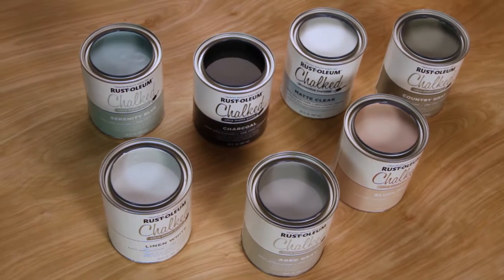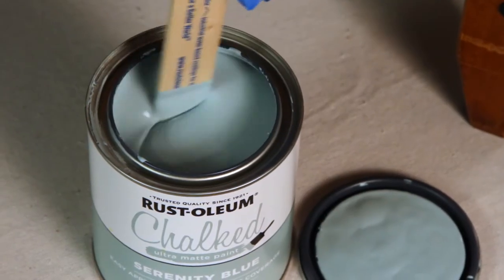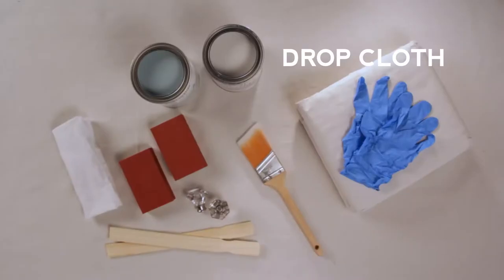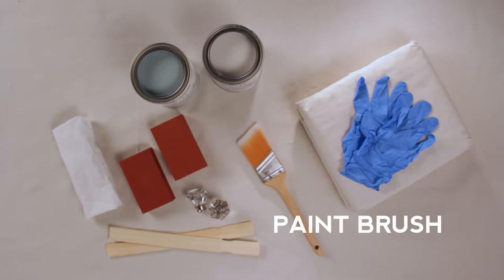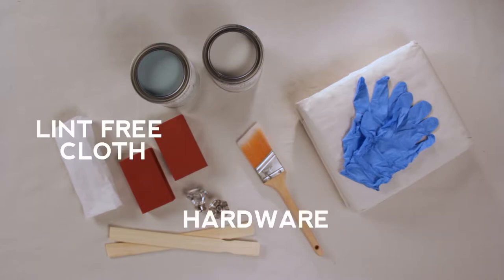Here's what you need for your project. Chalked paint, Rust-Oleum's is great. It's fast and easy to use and dries to a velvety smooth finish. A drop cloth, 180 or 220 grit sandpaper, a 2-inch high-quality paintbrush, gloves, a lint-free cloth, and hardware.